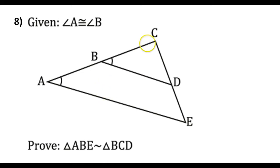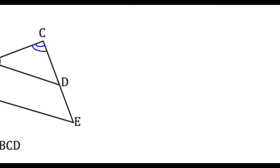What else do we know? We can use the shared angle. The inner triangle and the outer triangle both share angle C, so that angle will also be the same for both triangles. We can say that angle C is congruent to angle C by the reflexive property, and then that's enough. With the given and the reflexive property, we'll have angle-angle similarity. So this is going to be a really short proof.